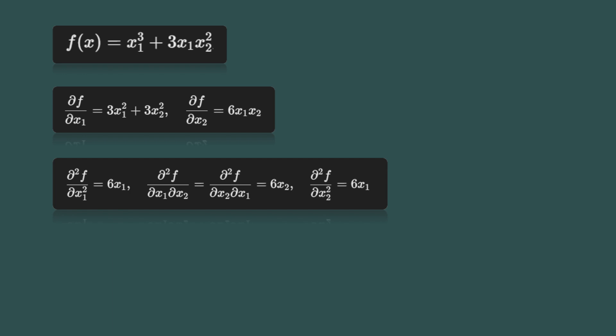The first entry of the Hessian matrix is the second derivative of the function with respect to x1 twice. Taking the derivative of 3 times x1 squared plus 3 times x2 squared with respect to x1 gives 6 times x1. The second entry in the first row is the mixed partial derivative with respect to x1 and x2. Taking the derivative of 3 times x1 squared plus 3 times x2 squared with respect to x2 gives 6 times x2. Moving to the second row, the first entry is the mixed partial derivative with respect to x2 and x1. Since the mixed partial derivatives are the same, this is also 6 times x2. Finally, the last entry is the second derivative with respect to x2 twice. Taking the derivative of 6 times x1 times x2 with respect to x2 gives 6 times x1.